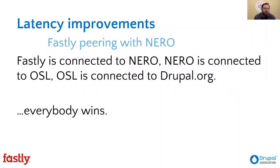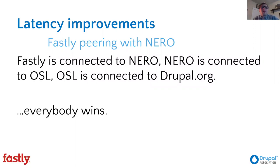This is a great open source win. Fastly is now peering with NERO — the Network for Education and Research in Oregon, which serves public universities, high schools, OPB and other state institutions — where the Open Source Lab is at Oregon State University. Being connected at the Seattle IX and routing all origin shield traffic through Seattle helped us win significantly on performance and time to first byte. It also benefits Python, Linux Foundation, GitHub, and other projects hosted at OSL — improving latency for anyone at Oregon State, University of Oregon, or even high schools in Oregon.